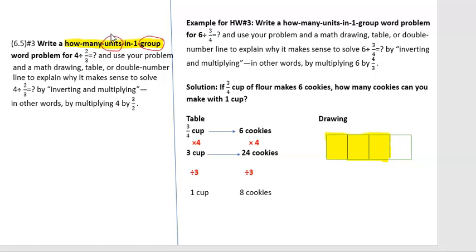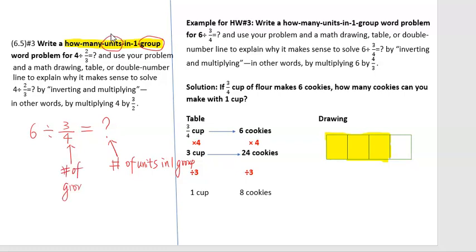And group would be the other thing, either like servings or cups or one recipe. So you just have to pick two things, one for a unit and one for a group. In this example, we have 6 divided by 3 quarters equals what. The question asks for the number of units in one group, which means the divisor has to be the number of groups. The dividend is always the total number of units.